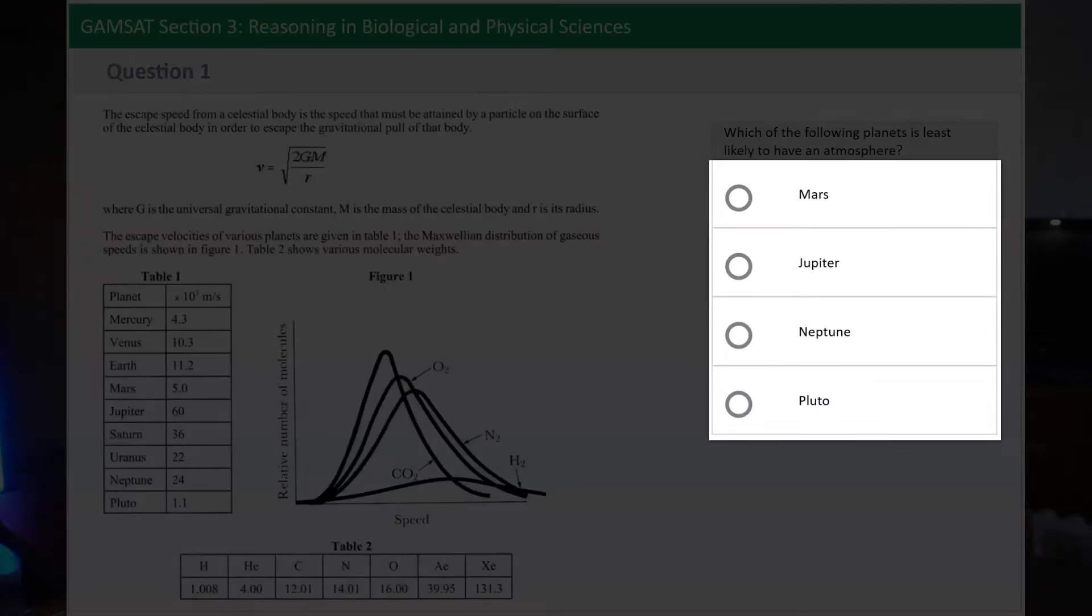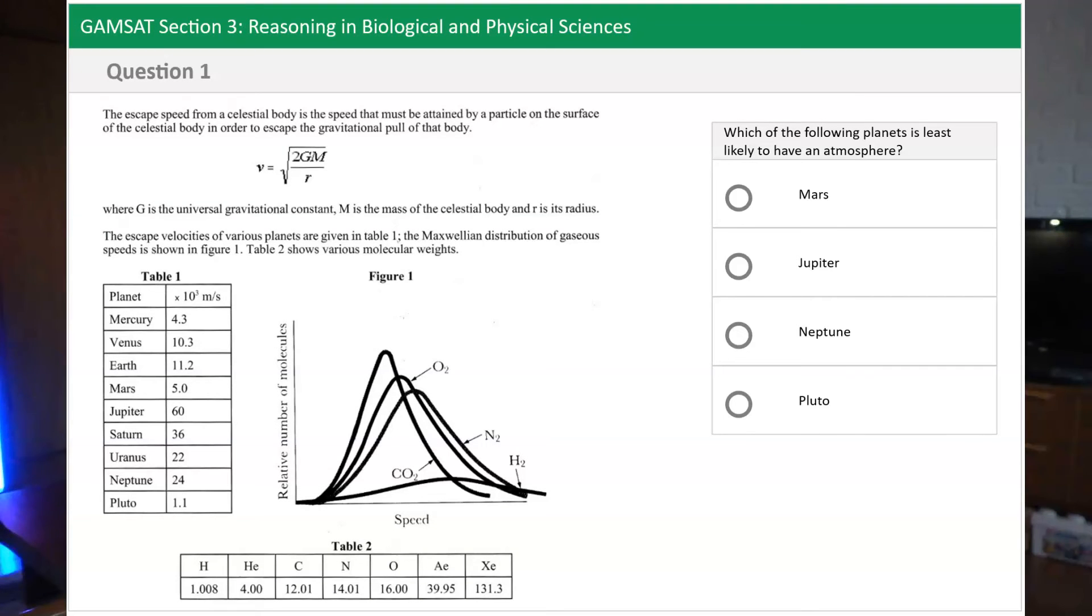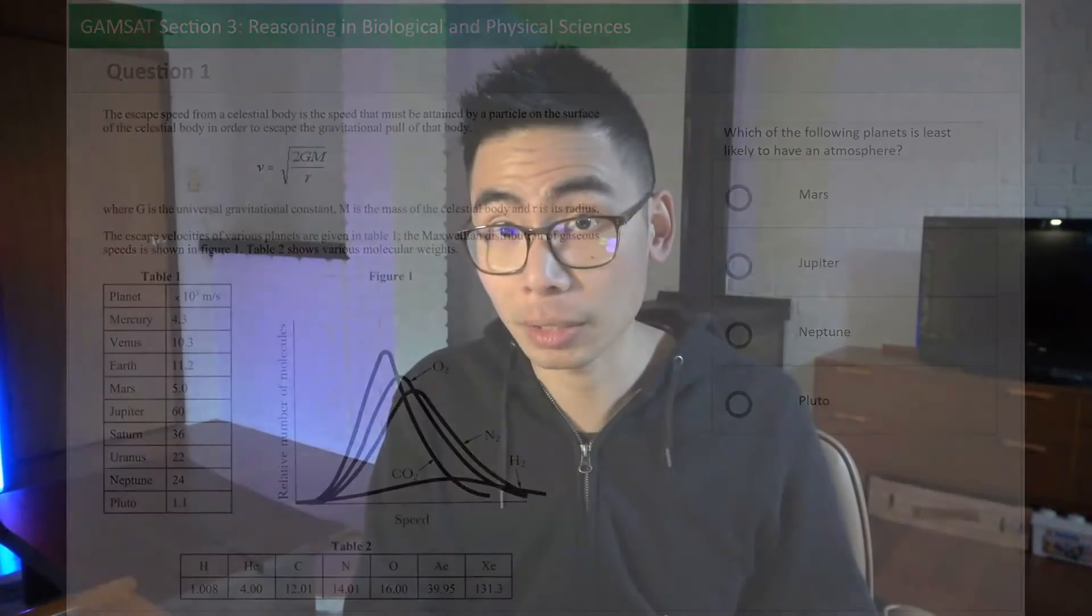And then you've got the answer options. Section 3 is multiple choice and you will have four alternative options, and your job is to choose the one that is most appropriate given what has been asked of you from the question stem and also the information provided in the stimulus.